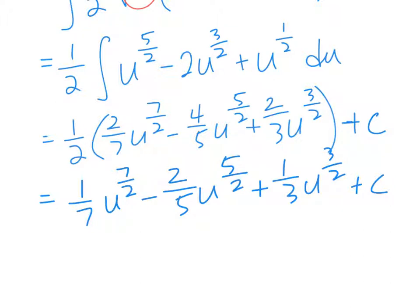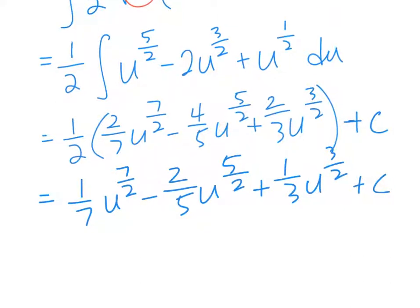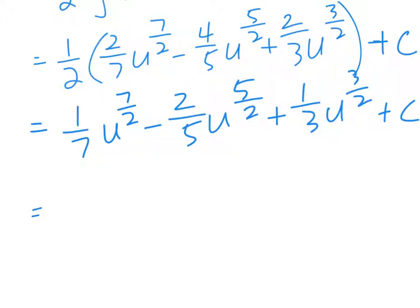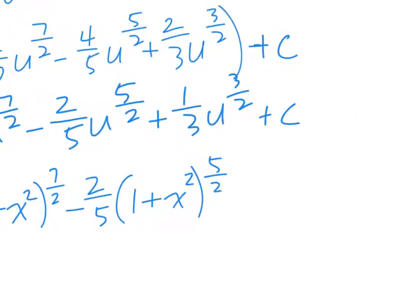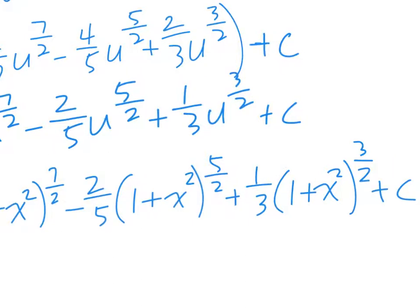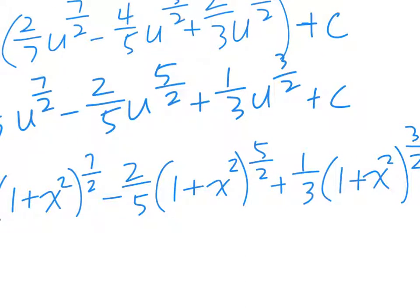What's the last thing we need to do? Plug in u. U is 1 plus x squared, u is 1 plus x squared, so 1 over 7, 1 plus x squared to the 7 over 2 minus 2 over 5 times 1 plus x squared to the 5 over 2 plus 1 third times 1 plus x squared to the 3 over 2 plus c. So this is the answer.